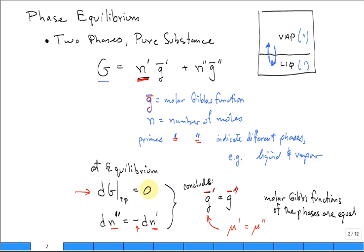You apply the chain rule for this differential change to the Gibbs function, and then you conclude that the molar Gibbs function for each of the phases has to be equal. We also saw that the chemical potential is another way of describing that molar Gibbs function. So the chemical potential of that pure substance in each phase is equal.